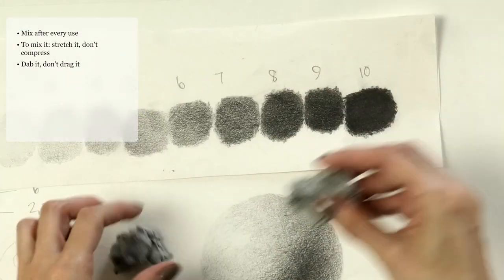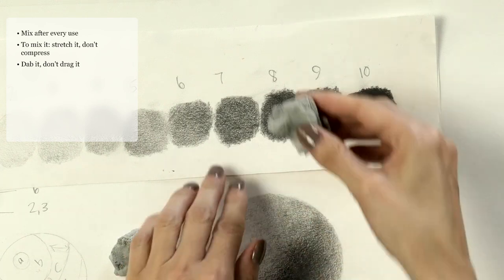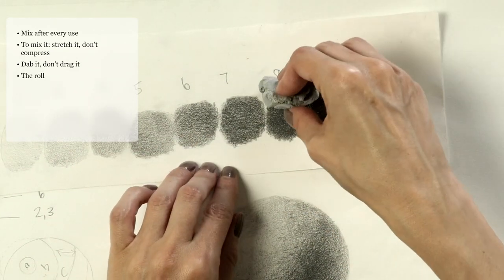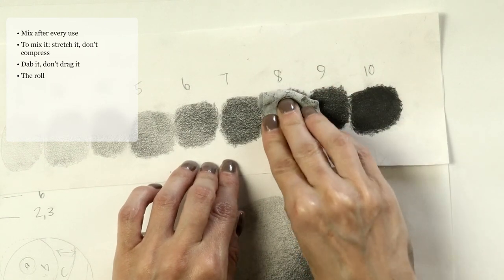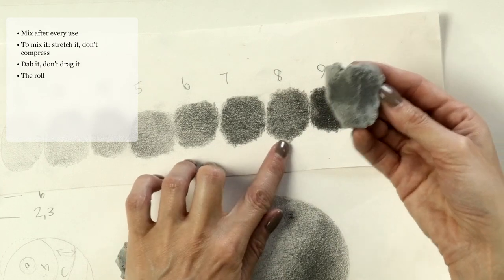Another technique I call the roll. You get enough of your kneaded eraser that you can fold it between two hands and get a smooth spot. Then you can lay that down in a roll, press and lift, and you can see that takes off a lot of the value.